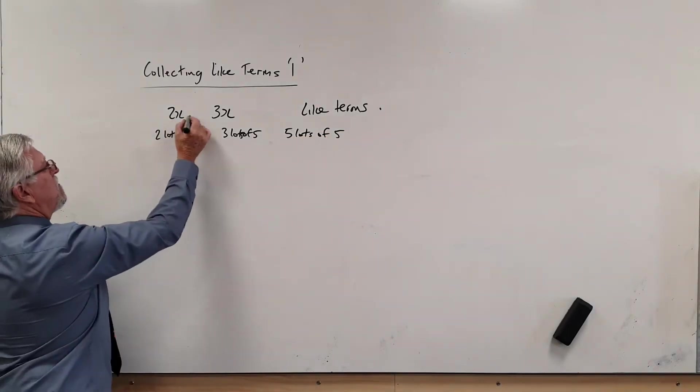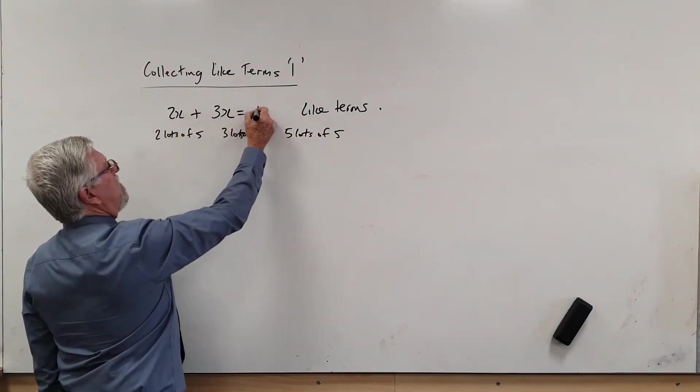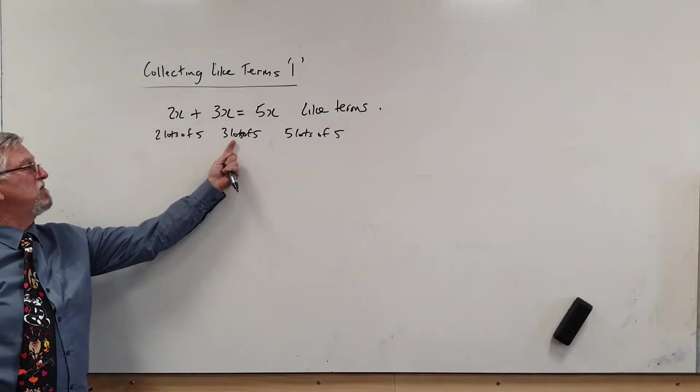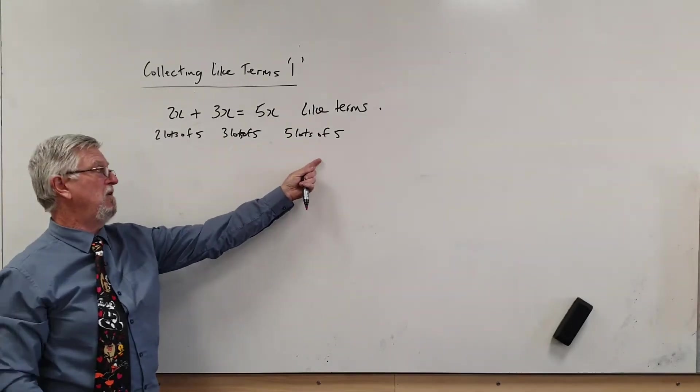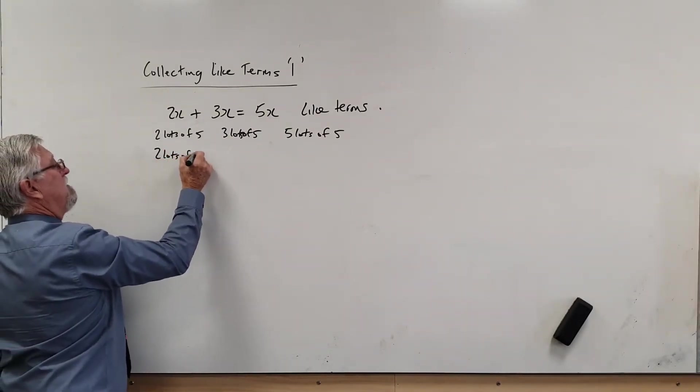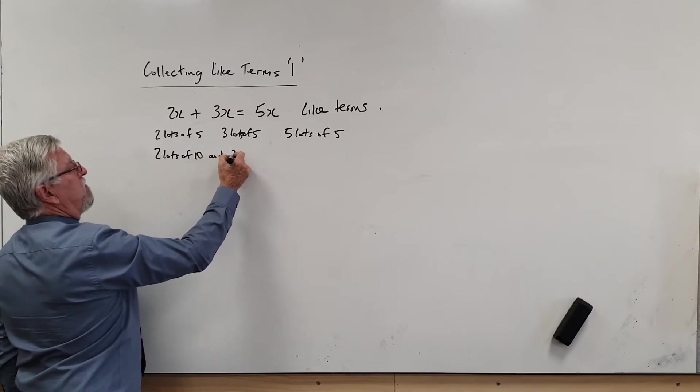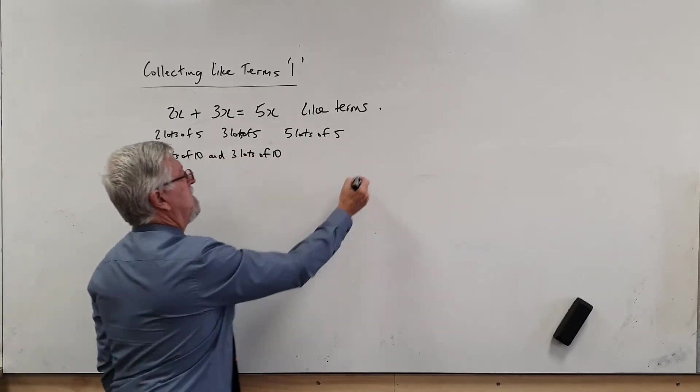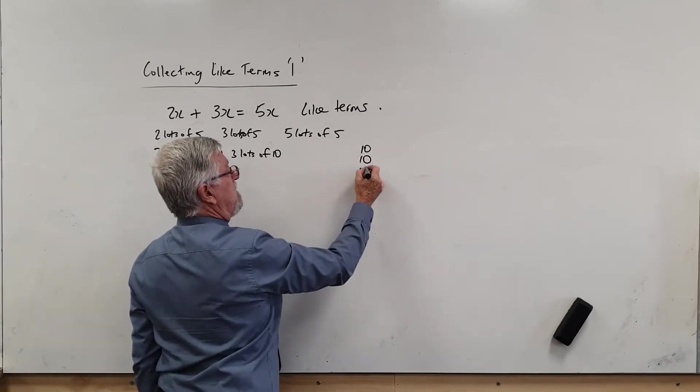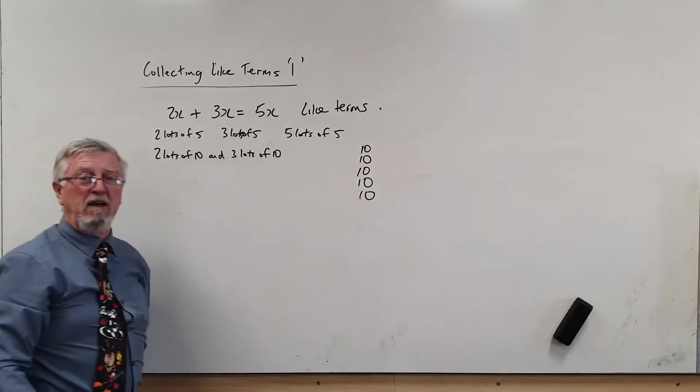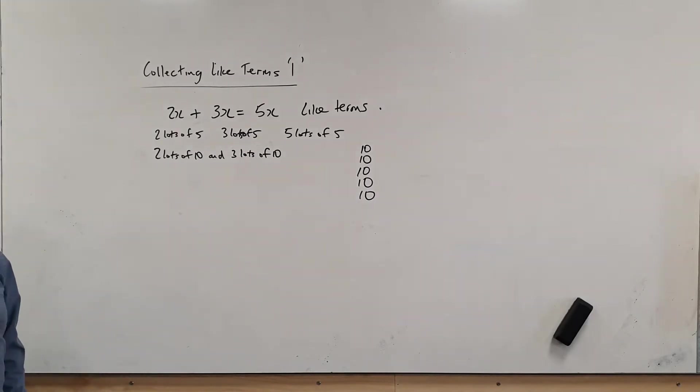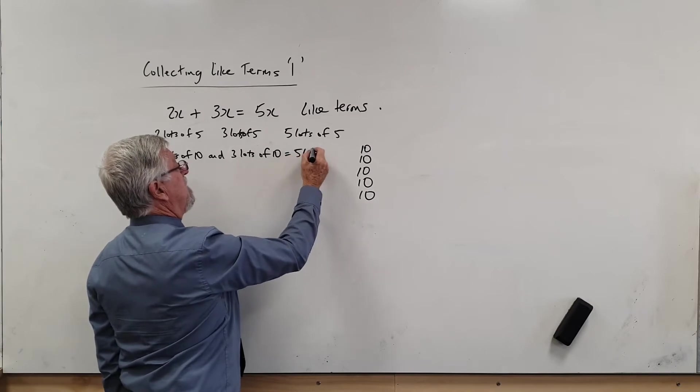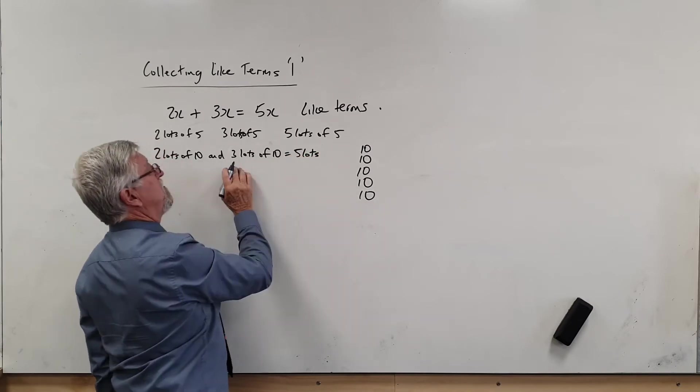Let's see what happens here: two lots of five and three lots of five is five lots of five. So this is common sense—two lots of five and three lots of five has got to be five lots of five. Two lots of ten and three lots of ten... that's ten and ten, and three lots of ten. What's that all together? We've now got five lots of ten. So what's the rule?